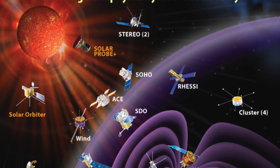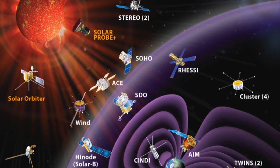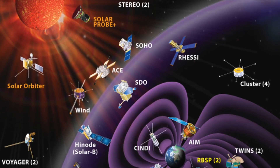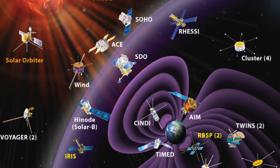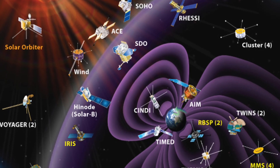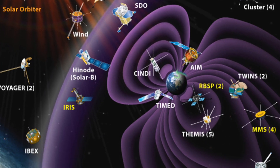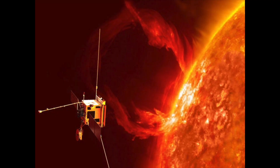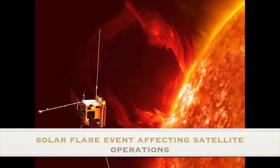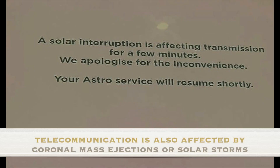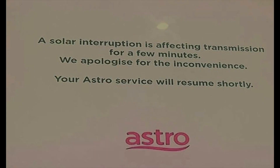The effects of solar activity can be seen on satellite equipment, are dangerous to astronauts and force them to take shelter, and cause breakdowns to telecommunication systems and power grids. This is an example of solar flares affecting satellites. Telecommunication services such as Astro are also affected by CME events or solar storms.